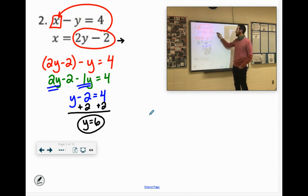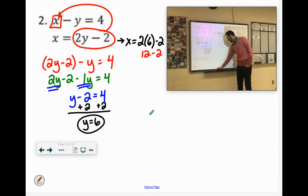It says x equals 2y and y equals 6 minus 2. So 2 times 6 is 12 minus 2 is 10.